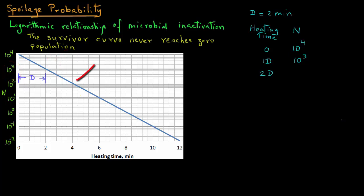After 3d, it will be 10, and so on. After 6d, the population will be 10 raised to power minus 2. So that raises a question, what does 10 raised to power minus 2 number of spores mean?